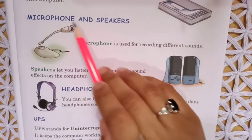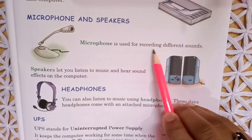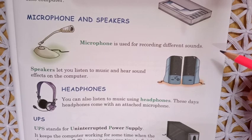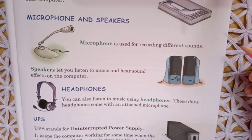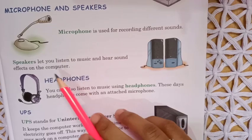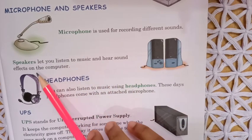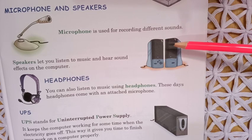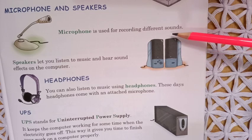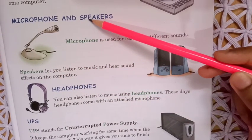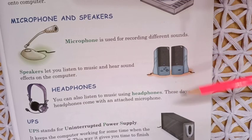Next is microphone and speakers. A microphone is used for recording different sounds. It is a type of mic attached to a computer for recording sound or any music. If you want to sing a song and record it in a computer, you need a microphone. A speaker lets you listen to music and hear sound effects on the computer. Microphone records our voice into the computer, while speaker plays back the sound or music already in the computer — they are opposites of each other.